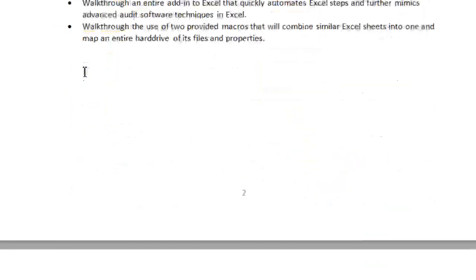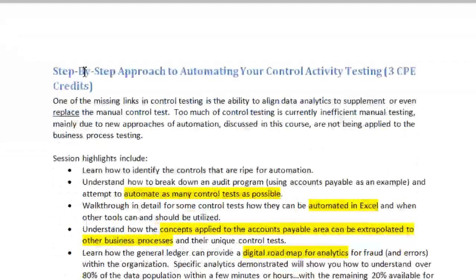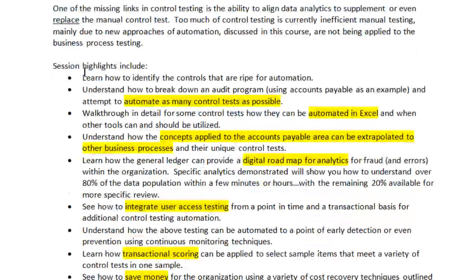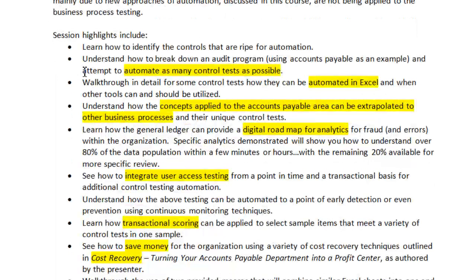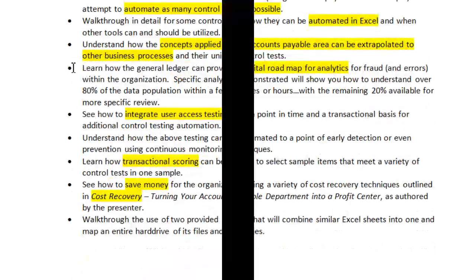Then, we can take this newfound knowledge in automating our control activity, and we're going to teach you how to automate as many control tests as possible using case studies from Accounts Payable and the General Ledger. We're also going to talk about user access testing, transactional scoring, but most importantly, how to save money through this process.